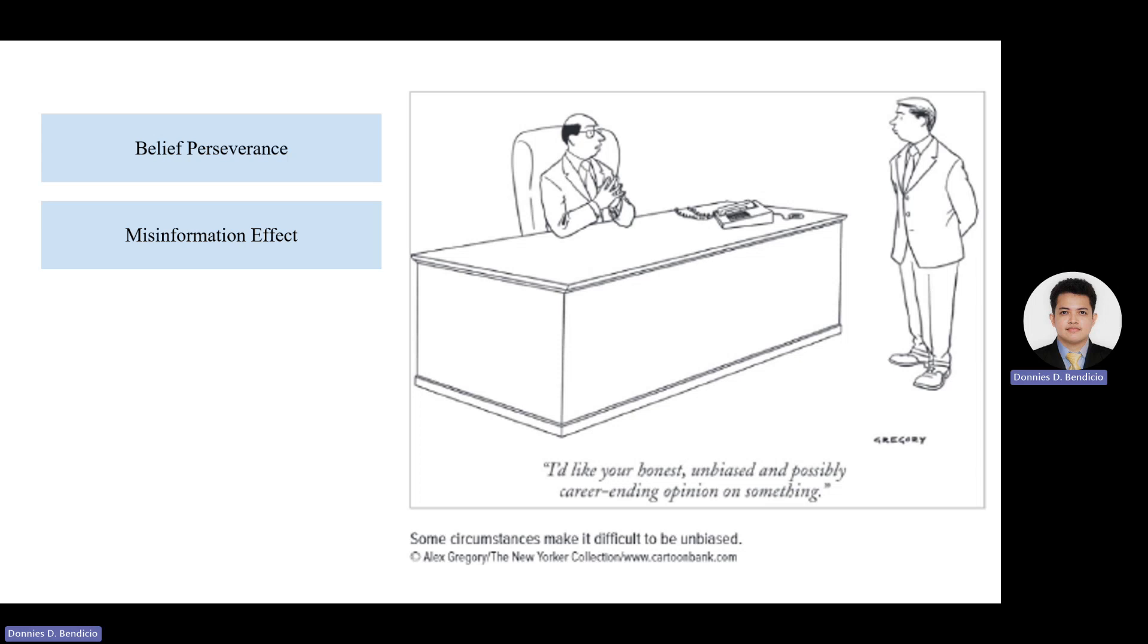In both cases, understanding these cognitive biases is essential to gain insights into how our perceptions of the social world can be distorted by cognitive processes. Future research could focus on developing strategies to mitigate the negative effects of these biases and improve the accuracy and fairness of our social judgments, ultimately contributing to more informed and equitable decision-making in various social contexts.